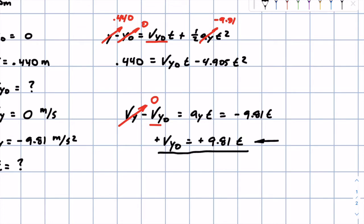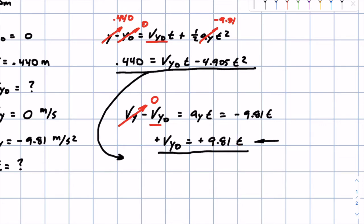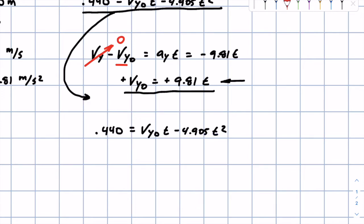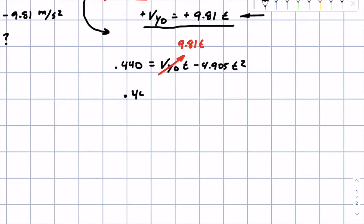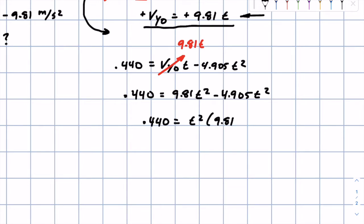We substitute v_y0 = 9.81t into the long equation. Plugging in: 0.440 = 9.81t² − 4.905t². Factoring out t², we get 0.440 = (9.81 − 4.905) · t², and the term in parentheses simplifies to positive 4.905.